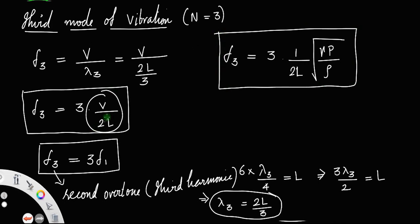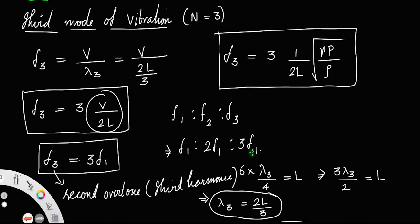If we look at the ratios of the different modes of vibration, we have f₁ : f₂ : f₃ = f₁ : 2f₁ : 3f₁ = 1 : 2 : 3. The ratio is that of the natural numbers, and if there is a fourth mode, it continues as 1 : 2 : 3 : 4, and so on.